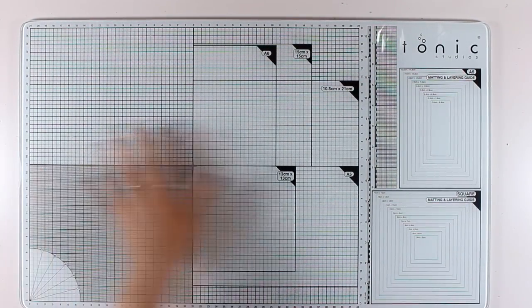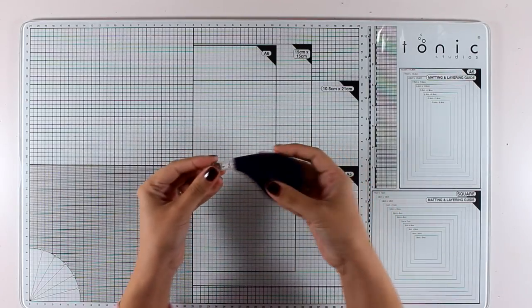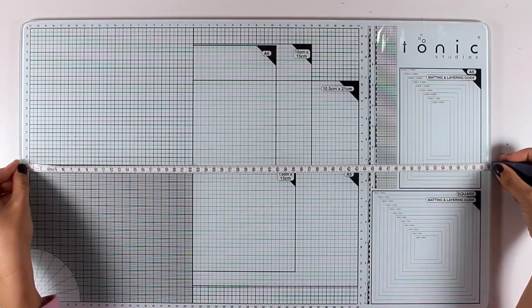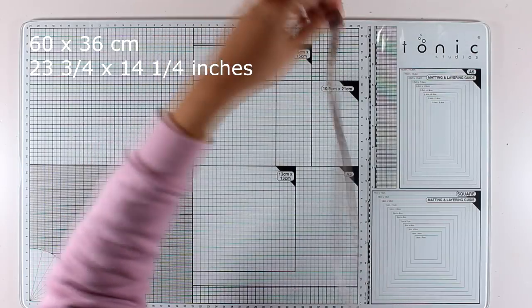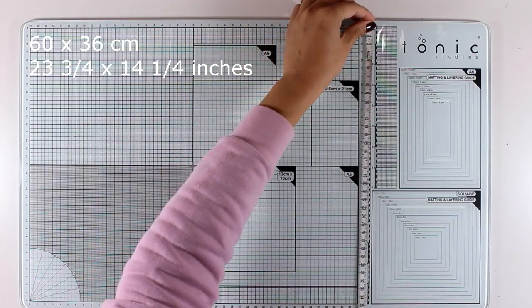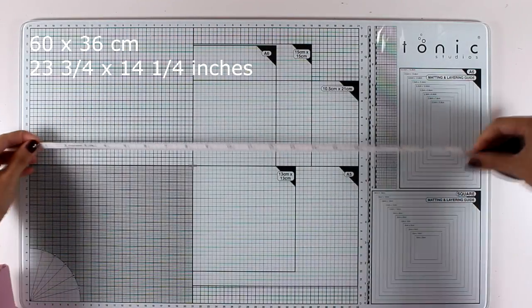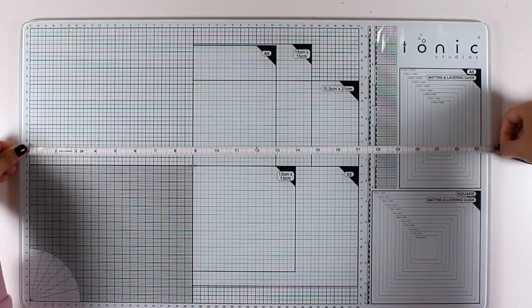I'm going to measure the one that I have so you can see how big that surface is, and I'm going to give you the measurements in both inches and centimeters. That's 60 by 36 in centimeters and it's 23 inches and three quarters of an inch by 14 and a quarter in inches.